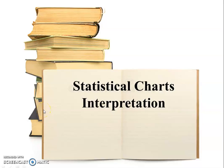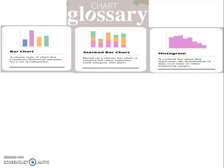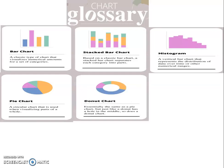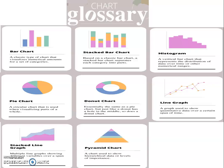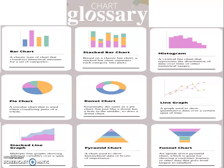Hi everyone. Today we're going to be talking about analyzing or interpreting a statistical chart. When we say statistical chart, we're talking about any chart including numbers to analyze anything related to our themes — we might have a bar chart, stacked bar chart, histogram, pie chart, donut chart, line graph, stacked line graph, pyramid chart, or funnel chart.